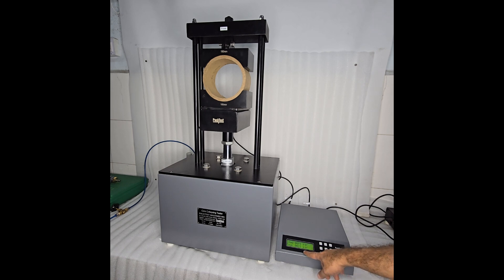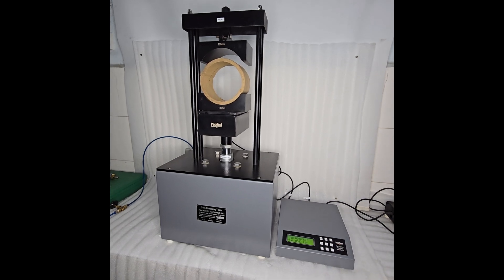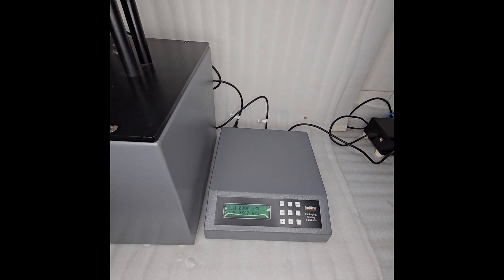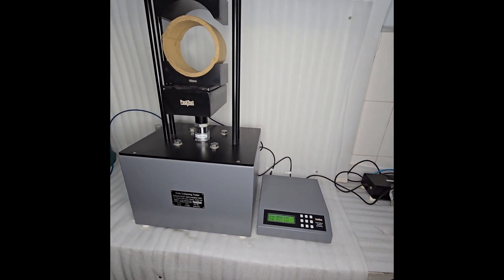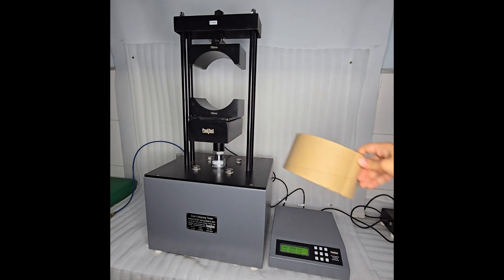The reading on the display should increase slowly. As soon as the sample fails, the reading is shown here. Remove the failed sample, test minimum 5 samples before calculating the average.